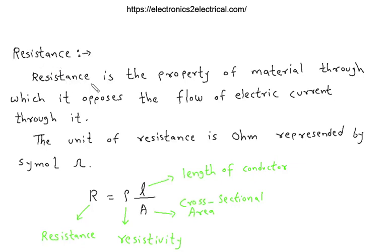Resistance is the property of material through which it opposes the flow of electric current through it. The unit of resistance is Ohm, represented by symbol Omega.